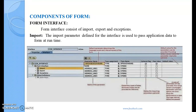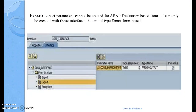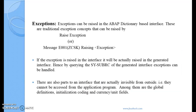The components of the form interface visible in the SFP transaction include import and export parameters. Form interface consists of import parameters, export parameters, and exceptions. The import parameters defined for the interface are used to pass application data to the form at runtime. Export parameters cannot be created for ABAP dictionary-based forms — they can only be created for interfaces of type smart form-based. Exceptions can be raised in the ABAP dictionary-based interface using traditional exception concepts raised by a RAISE statement or messages.